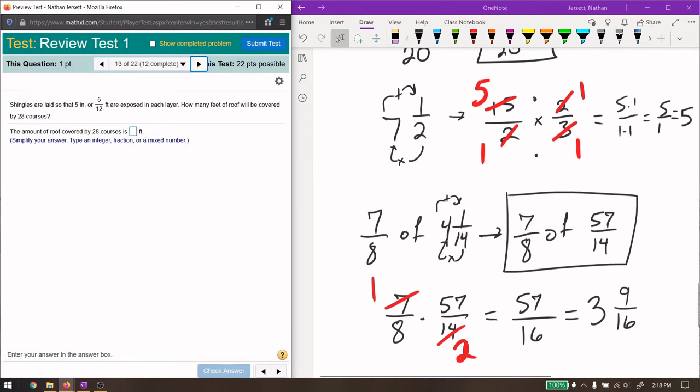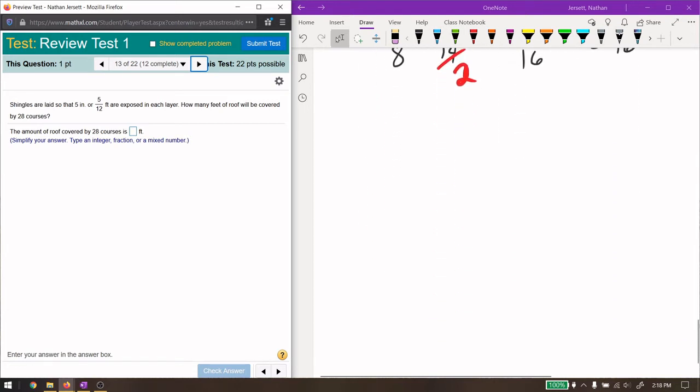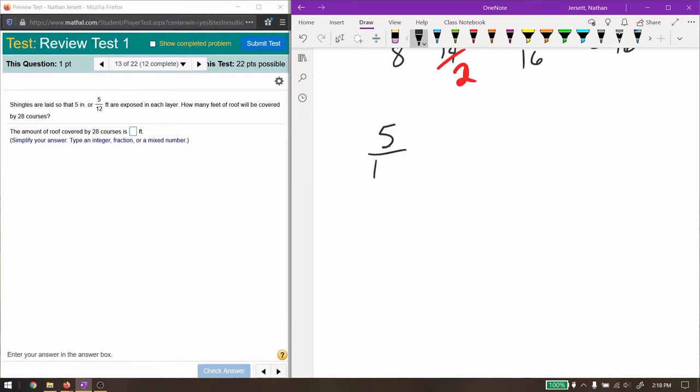Good. Shingles are laid so that 5 inch or 5 twelfths, 5 inches is 5 twelfths of a foot, are exposed in each layer. How many feet of roof will be covered by 28 courses? So if 5 twelfths of a foot are exposed in each layer. How many feet of roof will be covered by 28 courses? So this is going to be 5 twelfths per each course. And there's 28 courses.